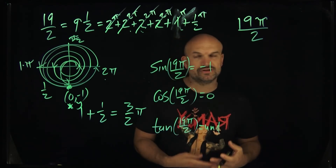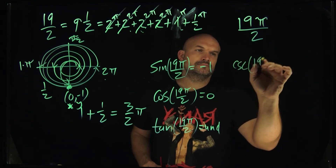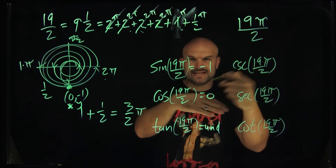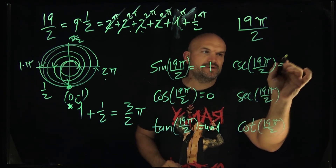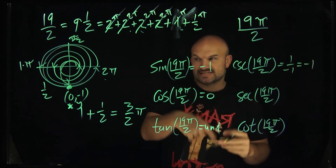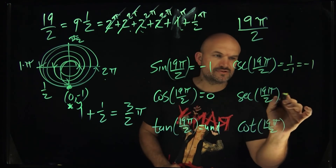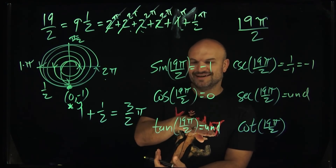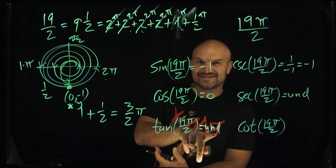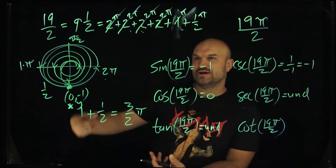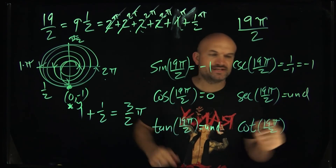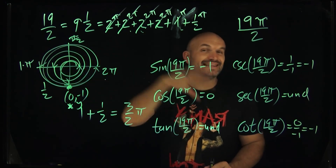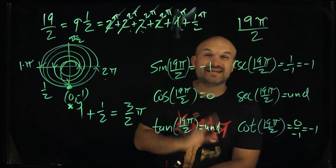For the reciprocal functions: cosecant is 1 over y, so 1 over −1 equals −1. Secant is 1 over x, so 1 over 0 is undefined. For cotangent, rather than thinking of it as 1 over undefined, remember cotangent is x over y — so that's 0 over −1, which equals 0. This problem was difficult because of the very large angle, but in the next video we'll go through the same process for an even larger angle.